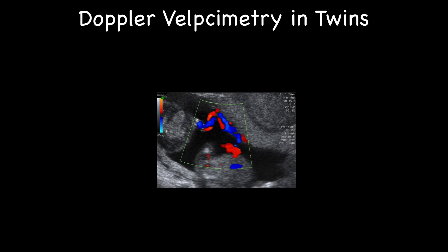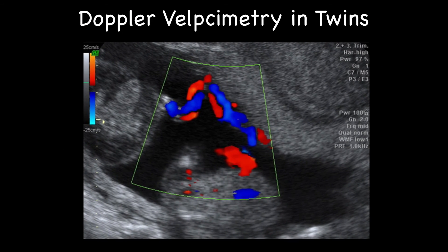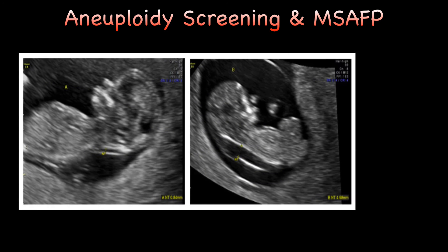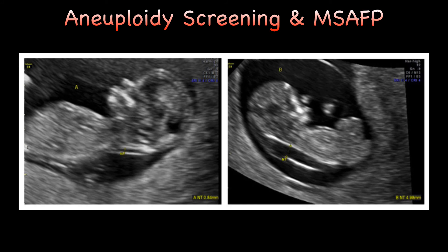Regarding the role of Doppler velocimetry in twins: umbilical artery Doppler should not be routinely offered in uncomplicated twin pregnancies. Serial Doppler studies may be done, however, for early diagnosis of intrauterine growth restriction when ultrasound shows discordancy. In multiple pregnancies, aneuploid screening using nuchal translucency and maternal serum alpha-fetoprotein measurements should be offered. An elevated maternal serum alpha-fetoprotein value of 4.5 times the median in an uncomplicated twin gestation is abnormal and requires further testing.